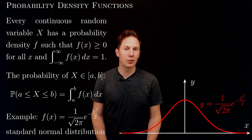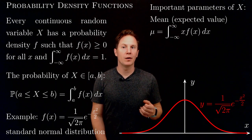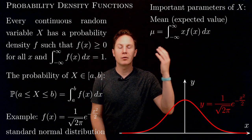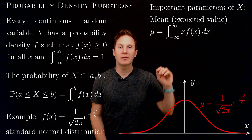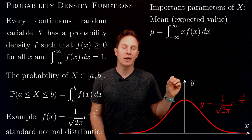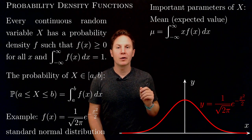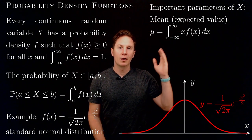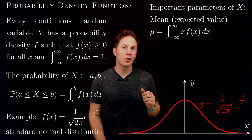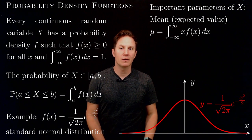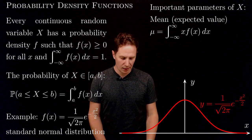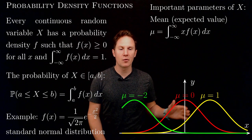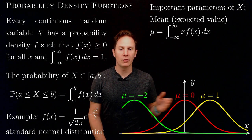There are various important properties that one can read off from the probability density function. The mean or expected value of x is obtained by taking the integral from negative infinity to infinity of x times f of x dx, often denoted by mu. This is the x-coordinate of the centroid of the region under the curve. For the standard normal distribution the mean is zero, but it can be shifted to 1 or negative 2 for example.